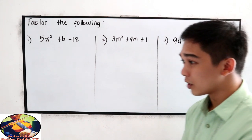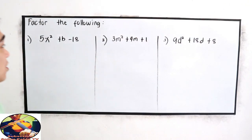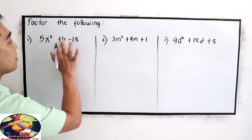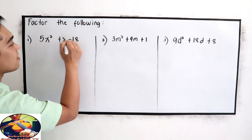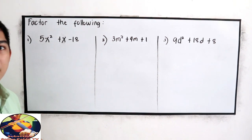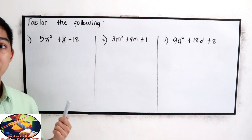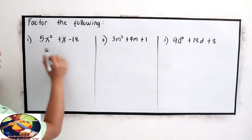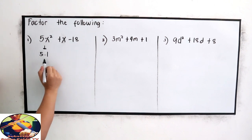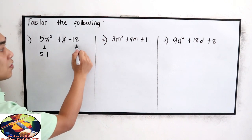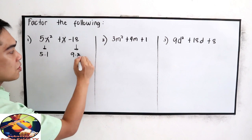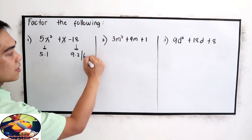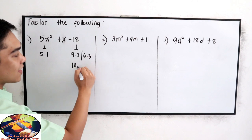Now, let's try number 1, 5x squared plus x minus 18. Let's try the factor using the trial and error method. Factors of 5 is 5 times 1 or 1 times 5. Factors of 18 can be 9 times 2, 6 times 3, 18 times 1.